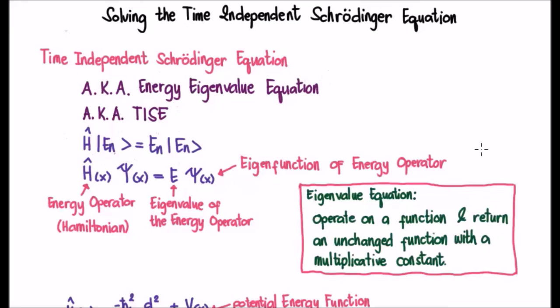So in an eigenvalue equation, you act or operate on a function and you get back or returned an unchanged function with the exception of the multiplicative constant, known as the eigenvalue.